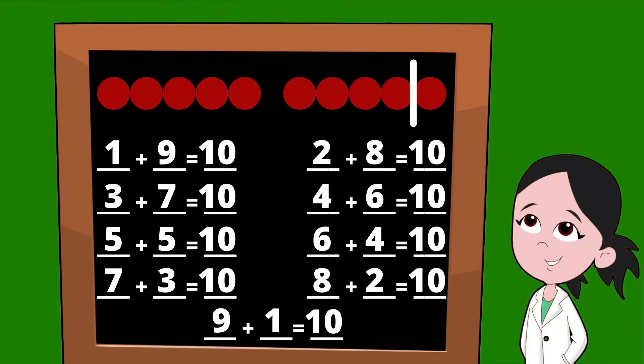And that's our last partner. The partners for the number 10 are: one and nine, two and eight, three and seven, four and six, five and five, six and four, seven and three, eight and two, and nine and one. Great job — you've completed all of your partners for the number 10.